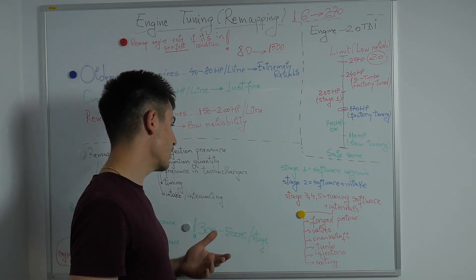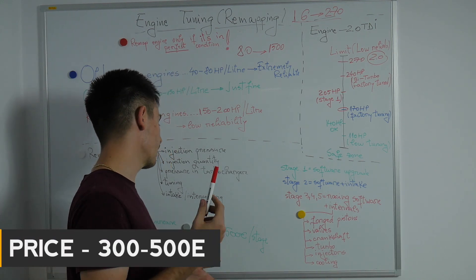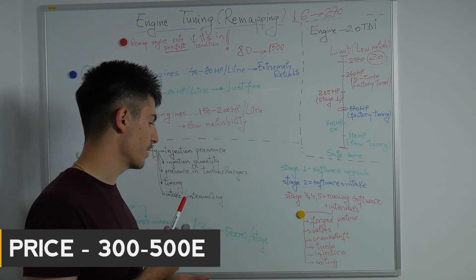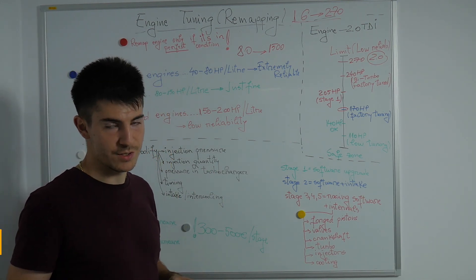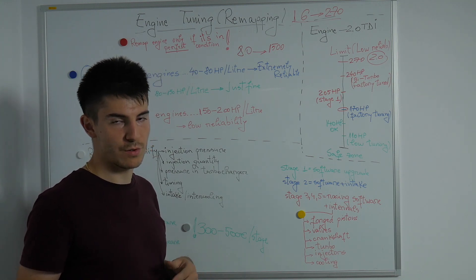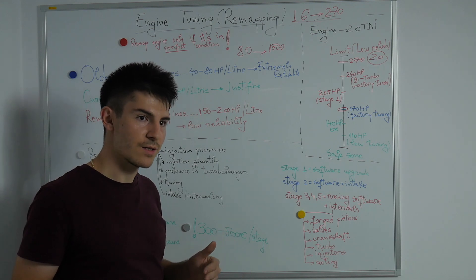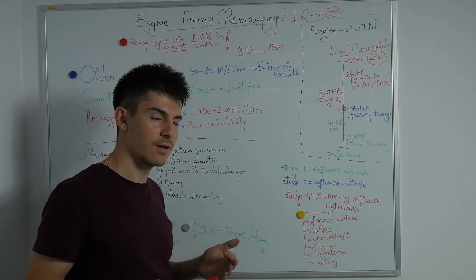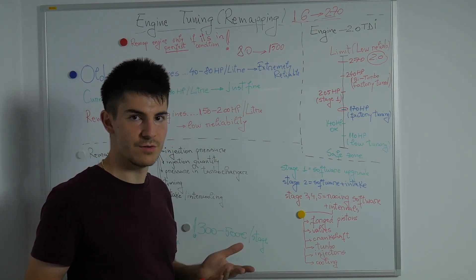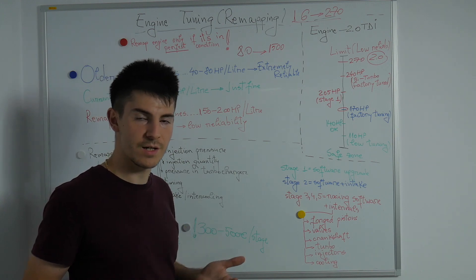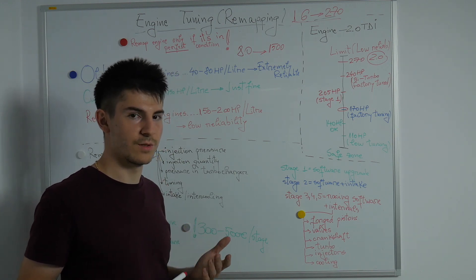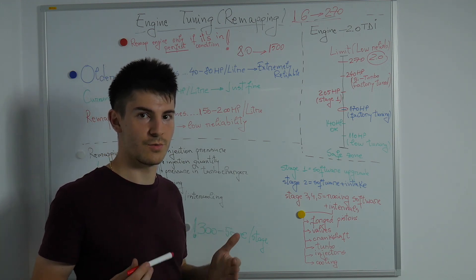Now let's talk a bit about the price for remapping. If you want a stage 1 or stage 2, it's anywhere from 300 to 500 euros per stage. It depends on the car, on the software of the car, the version of the ECU. In some cases you have the same car and there are 2 or 3 versions of the ECU. Each ECU is unique and you have to add the proper modifications to it in order for the car to run properly.